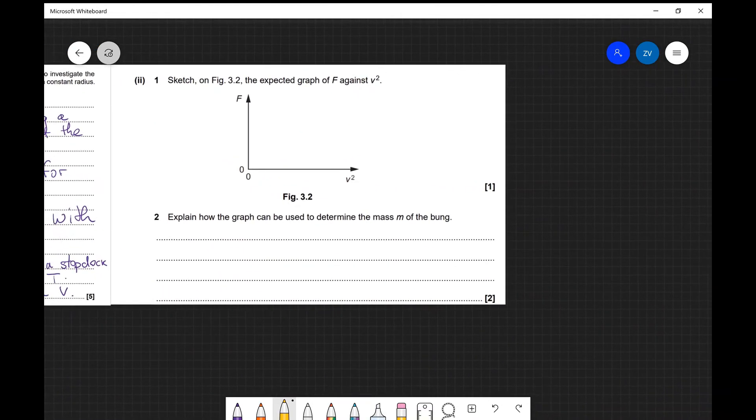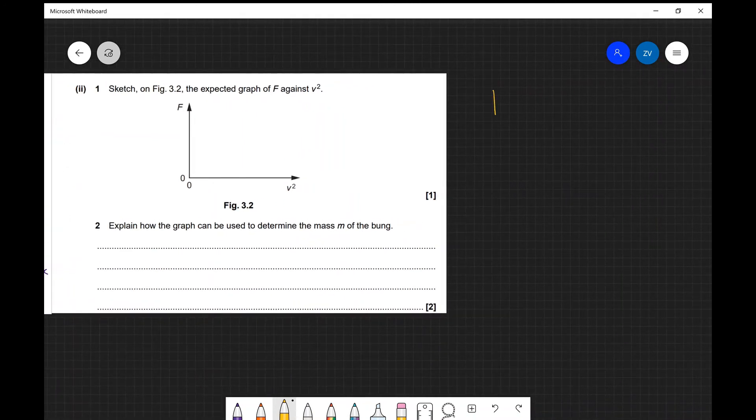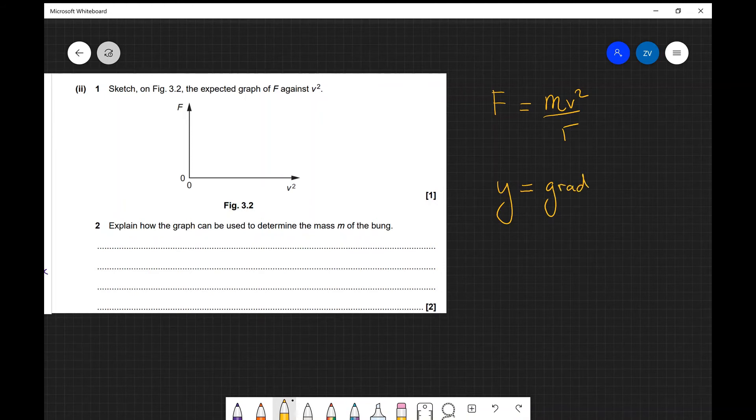Let's have a look at the very last bit of this question which says sketch from figure 3.2 the expected graph of F against v squared. So what I'm going to do is write down the formula for centripetal force which is F equals mv squared over r, and just underneath it I'm going to write the equation for a straight line which is y equals mx plus c. In this case the mass is also called m, so I'm just going to call my gradient grad times x plus c.